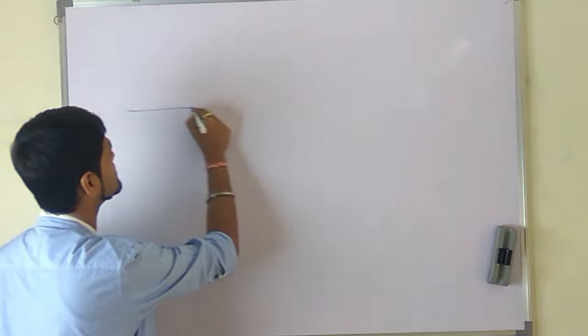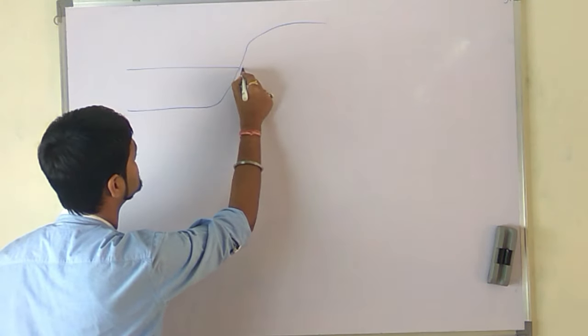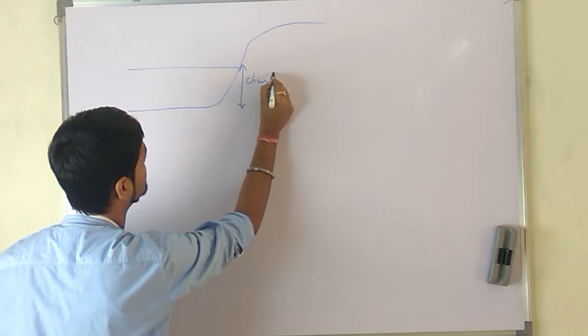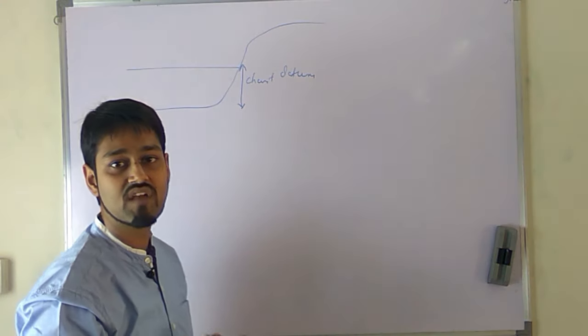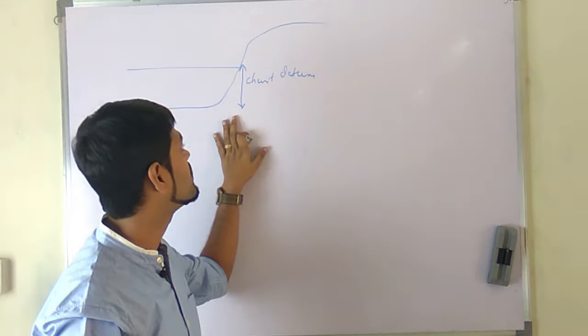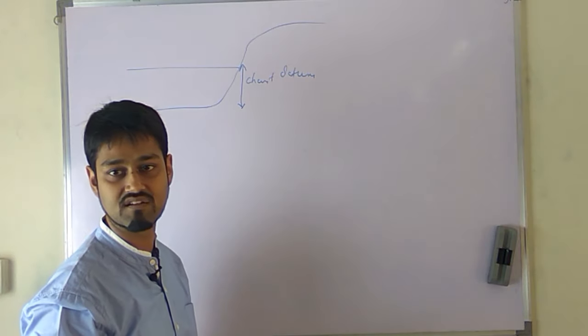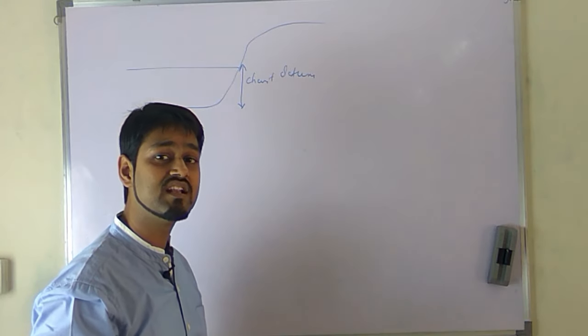For example, suppose this is my sea bed. Now if this is my chart datum, it simply means that in any phase of the year, water level in this place cannot or should not go below this chart datum level. Now when should it go higher than the datum level?